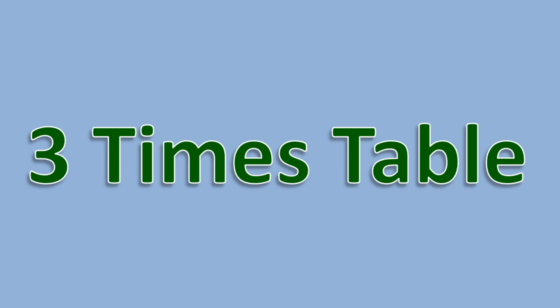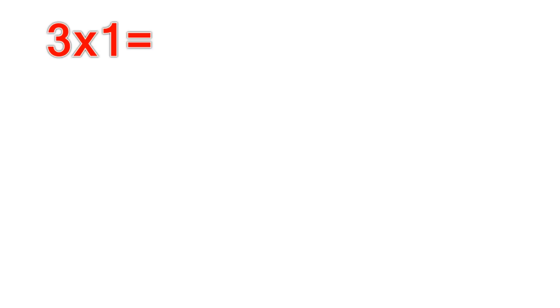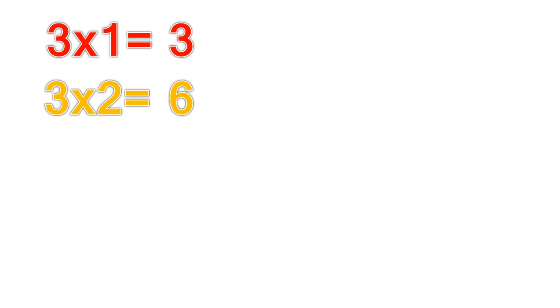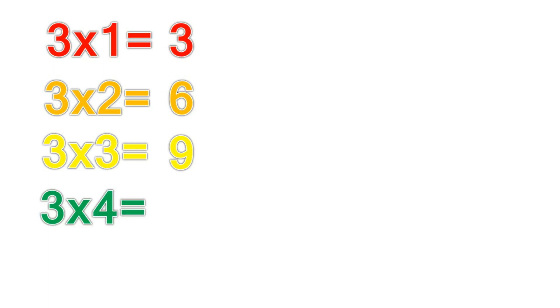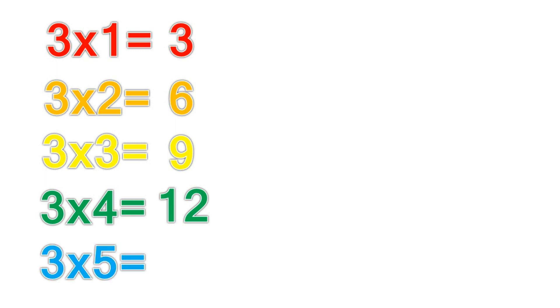3 times table. 3 times 1 equals 3. 3 times 2 equals 6. 3 times 3 equals 9. 3 times 4 equals 12. 3 times 5 equals 15.